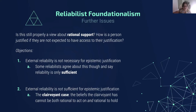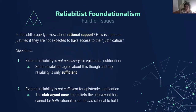Here's a second kind of objection: external reliability is actually not sufficient for epistemic justification. After all, we think it might be the case that you have a reliable process that helps you form your belief, but your belief doesn't have justification. Think of the clairvoyant case. The beliefs that the clairvoyant has cannot both be rational to act on and rational to hold, the opponent says. It might be rational for the clairvoyant to act pragmatically — if I pretend it's not true and bad things happen, I might have pragmatic reasons to act on the belief — but that doesn't necessarily mean I have good epistemic reasons to hold the belief.